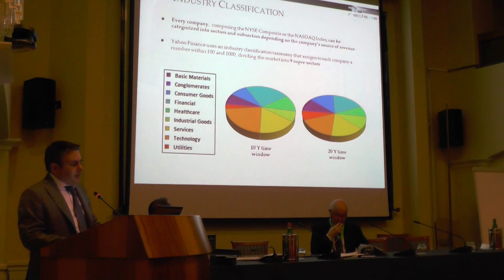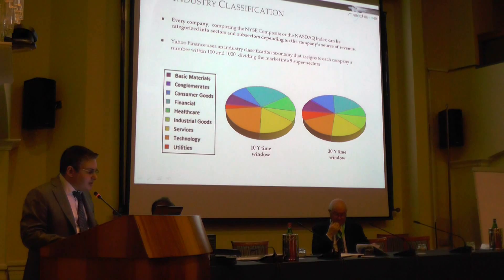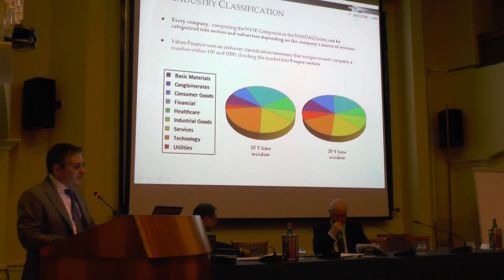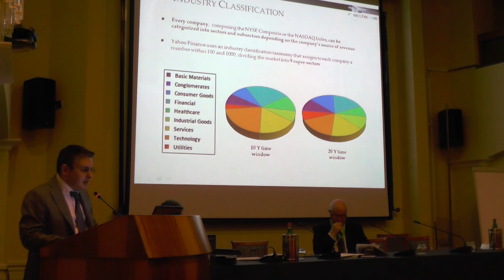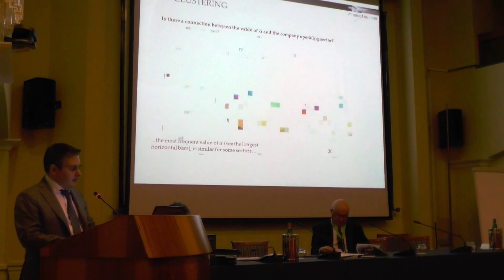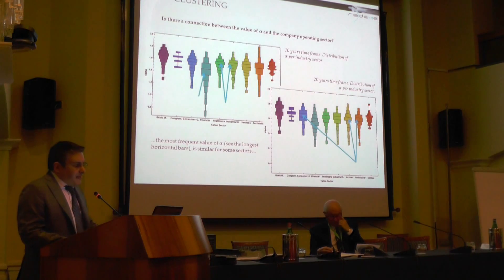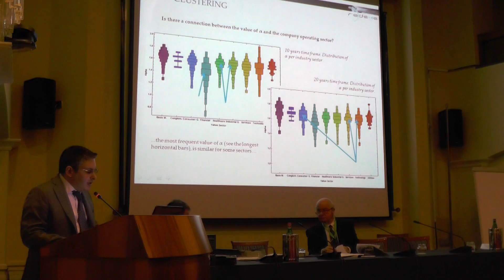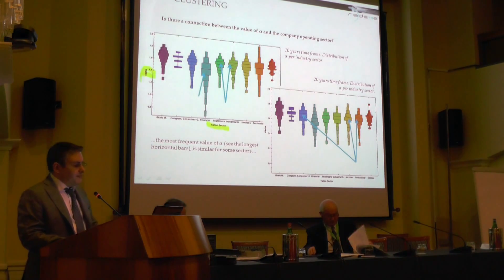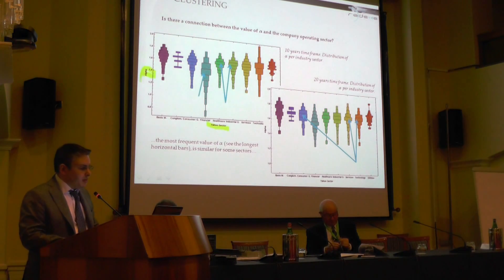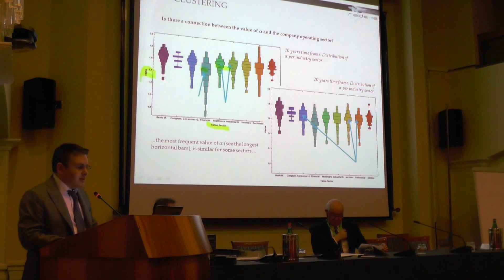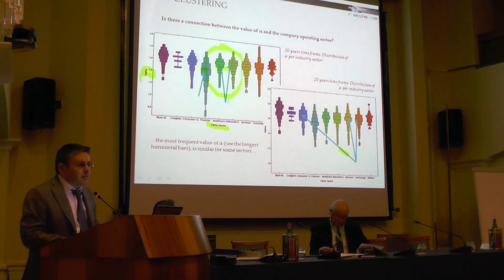To go further, I need to explain what an industry sector is. Every company in our testing set can be categorized into sectors and sub-sectors depending on its main source of revenue. We use a financial industry sector classification that assigns each company a number, dividing the market into nine super-sectors: basic activities, conglomerates, and so on. The question is: is there a connection between the stability exponent alpha and the industry sector? To answer, let's consider the distribution of alpha within each industry sector. The most frequent value of alpha is similar within a given sector, so it seems natural to group sectors according to the distribution of alpha itself.